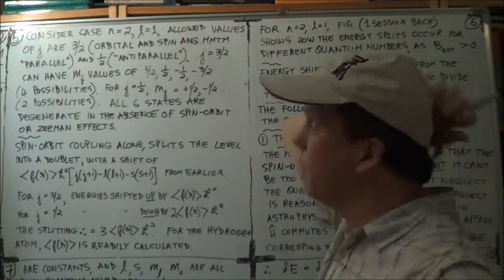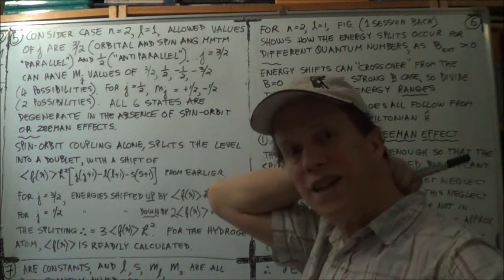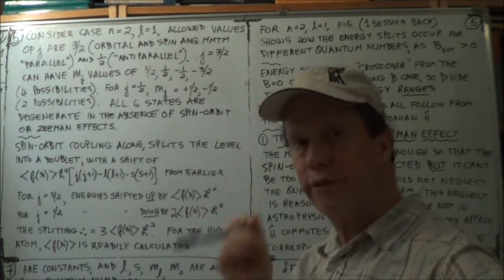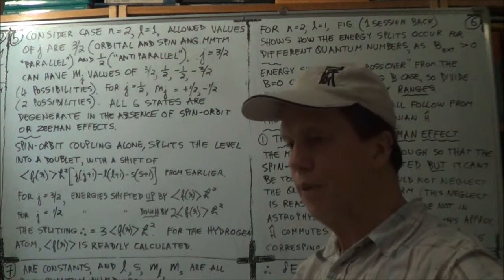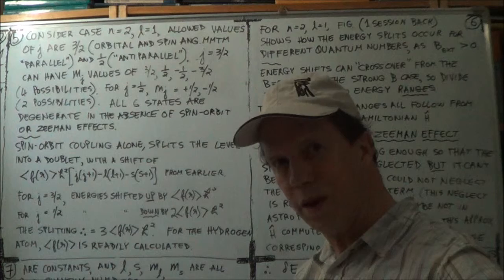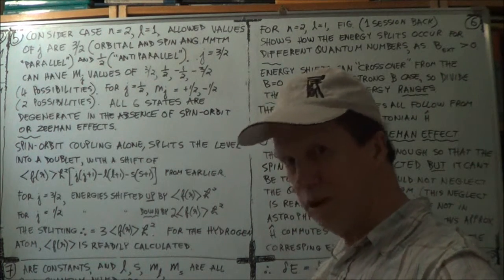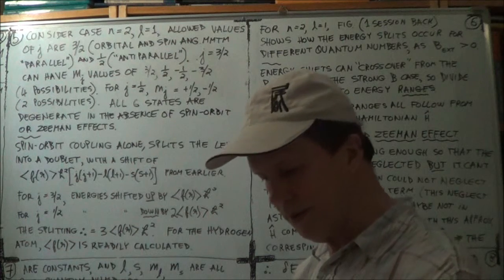So we're talking about the energy spectral line splitting when you switch on a magnetic field, the so-called Zeeman, or if you pronounce it the way Americans do, the Zeeman, but Americans are not known for their linguistic skills.